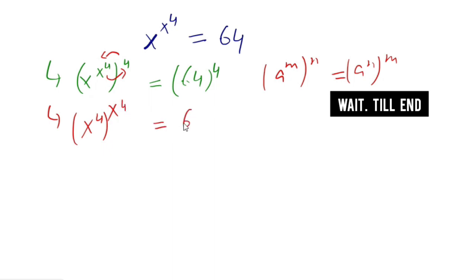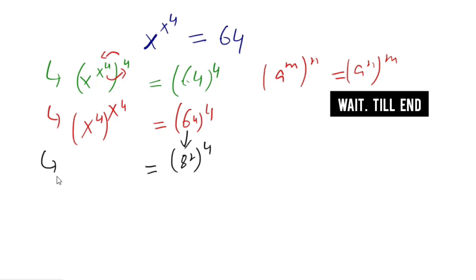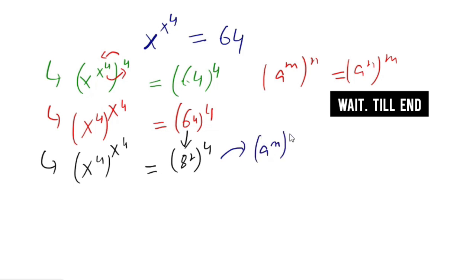On the right-hand side, 64 can be rewritten as x² whole power 4, and on the left-hand side it remains x^4 to the power x^4. We also know the identity that a^(mn) equals a^(m·n), so we can take a^(m × n).